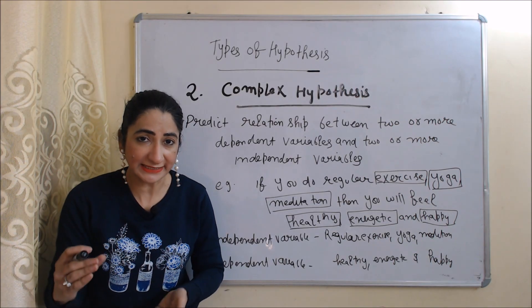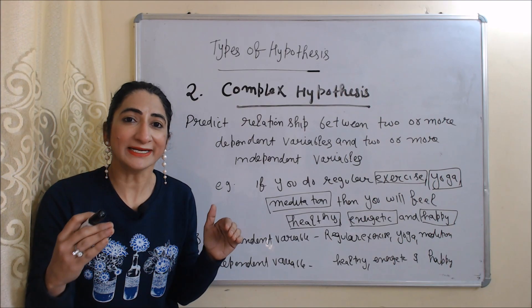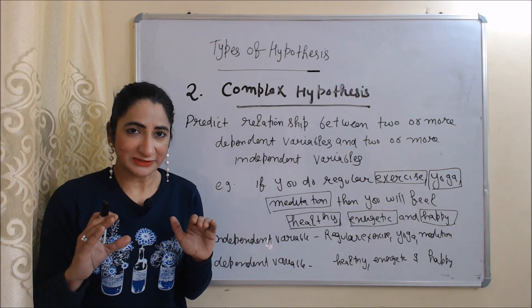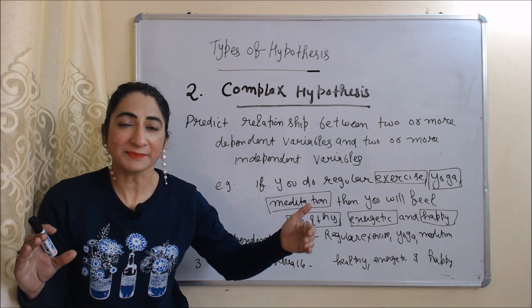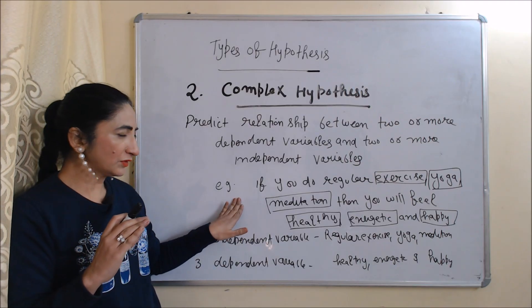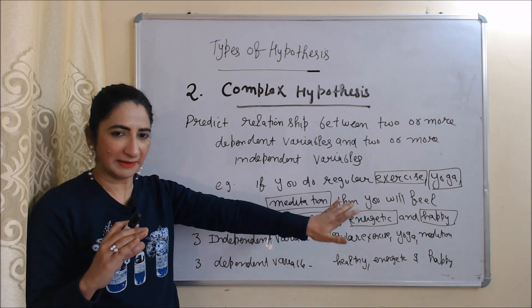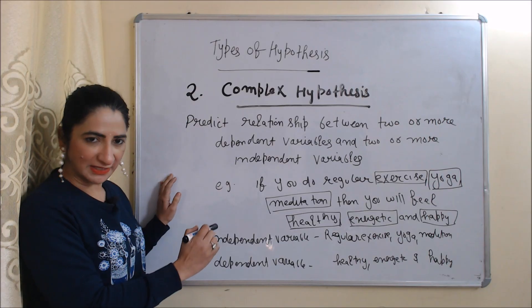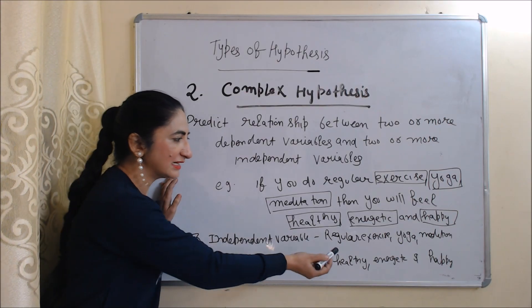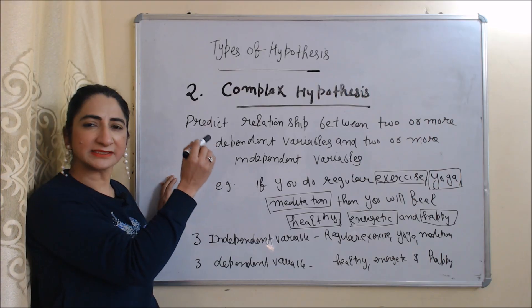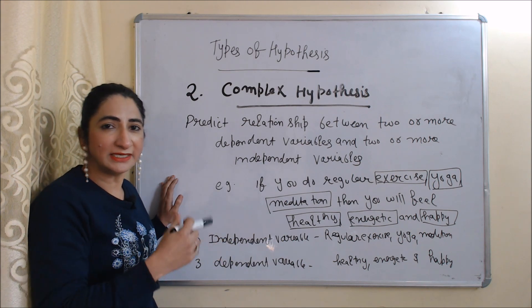The second type is complex hypothesis. Complex hypothesis predicts the relationship between two or more independent variables and two or more dependent variables. For example, if you do regular exercise, yoga, and meditation, then you feel healthy, energetic, and happy. Here we have three independent variables — regular exercise, yoga, and meditation — and three dependent variables — healthy, energetic, and happy.